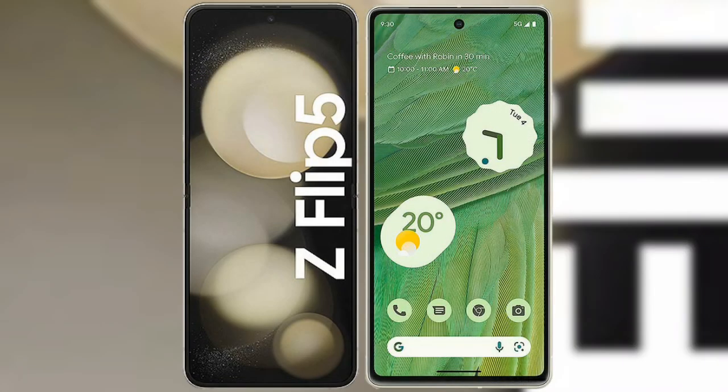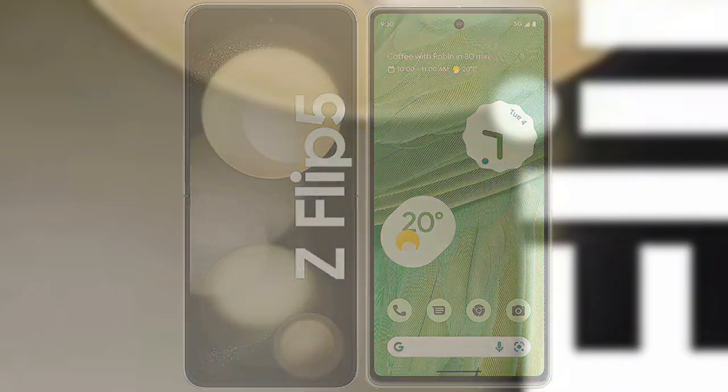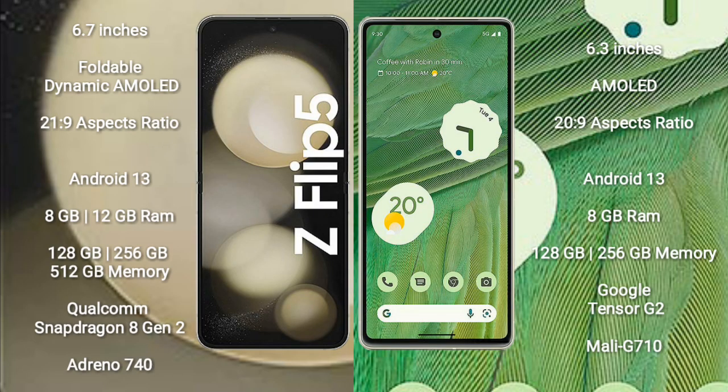I will compare the new Samsung Galaxy Z Flip 5 with Google Pixel 7. Samsung Galaxy Z Flip 5 comes with a 6.7-inch foldable dynamic AMOLED display and an aspect ratio of 21:9. Google Pixel 7 comes with a 6.3-inch AMOLED display and an aspect ratio of 20:9.